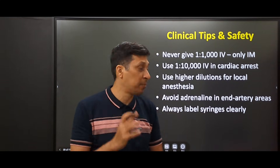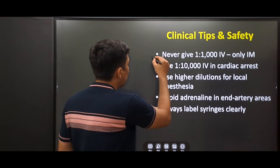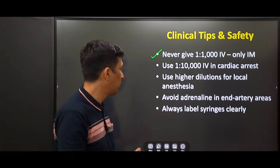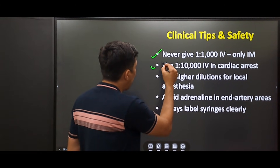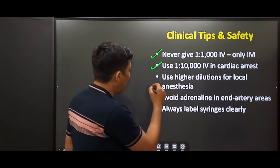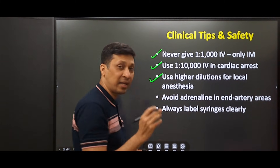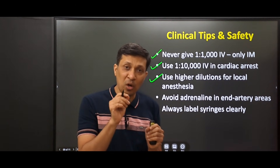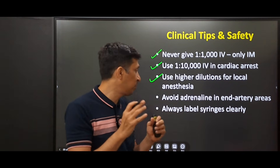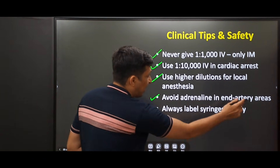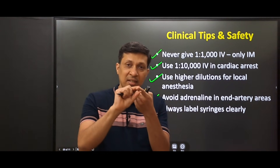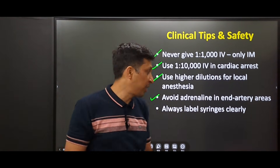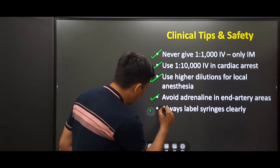Some clinical tips for safe administration: First, never give one in one thousand concentration IV — it must be given only intramuscularly. Use one in ten thousand IV during cardiac arrest. For local anesthesia, use higher dilutions because we want adrenaline only to prolong the duration of local anesthesia and to minimize bleeding, not to cause excessive vasoconstriction. Avoid adrenaline in end artery areas such as the tips of fingers. Whatever dilution you prepare, always label those syringes. Mastering dilutions of adrenaline is a must for every doctor for emergencies and surgeries.